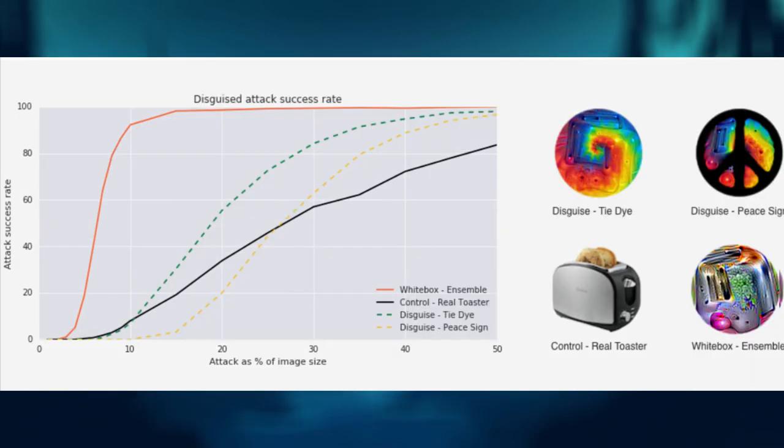A comparison of patches with various disguises. We can find that we can disguise the patch and retain much of its power to fool the classifier.